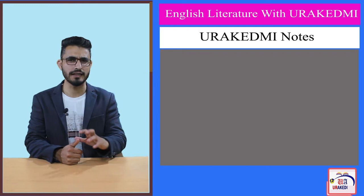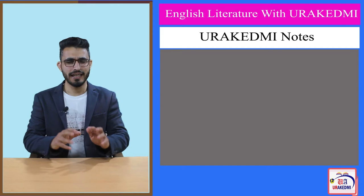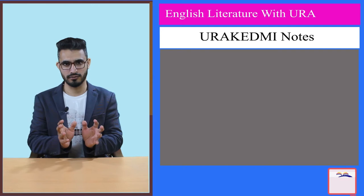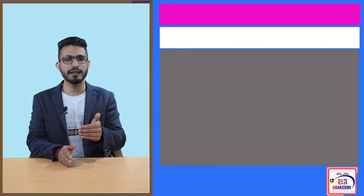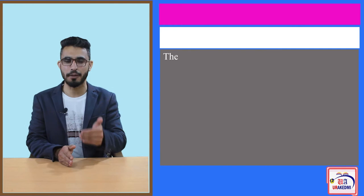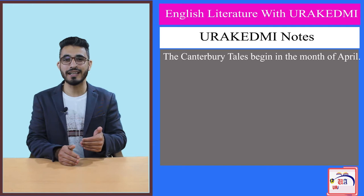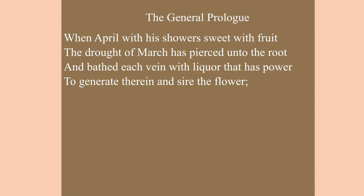Now these were the first four lines of the General Prologue. In these four lines, what Geoffrey Chaucer does is introduce to us the environment when the Canterbury Tales begin. He starts with the month of April, and initially he discusses the characteristic features of the month of April.